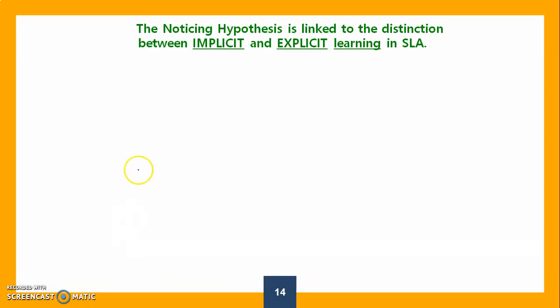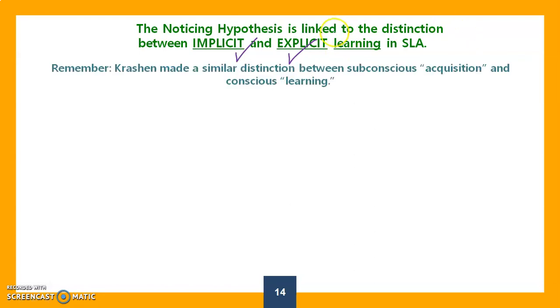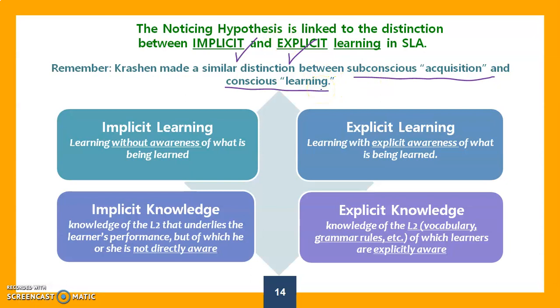According to the noticing hypothesis, Schmidt discussed two types of learning: implicit and explicit. If you remember from Krashen's monitor model, one of his hypotheses was the acquisition-learning hypothesis, in which he distinguished between subconscious automatic acquisition and conscious learning. This is similar to what we have here. Implicit learning is learning that happens without awareness - it's subconscious and leads to implicit knowledge. It's the knowledge of L2 that underlies learner's performance but of which he or she is not directly aware.